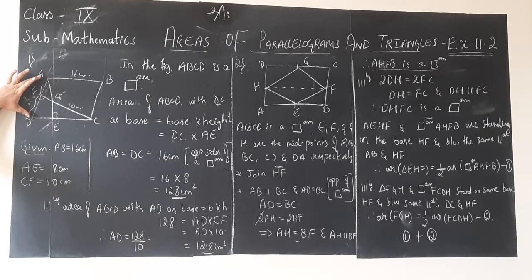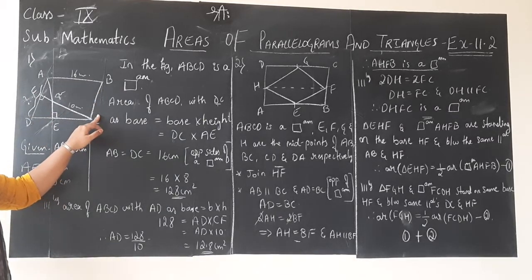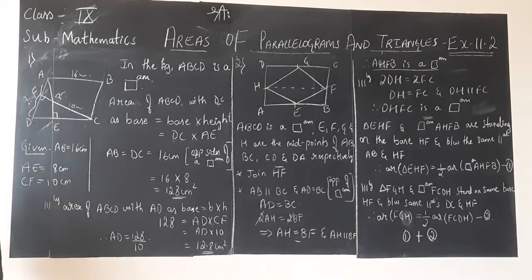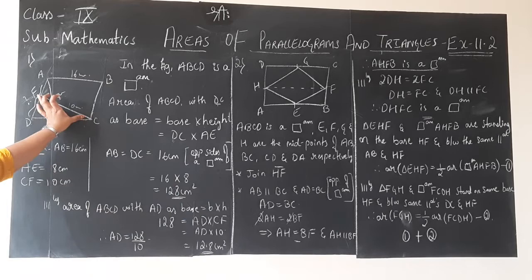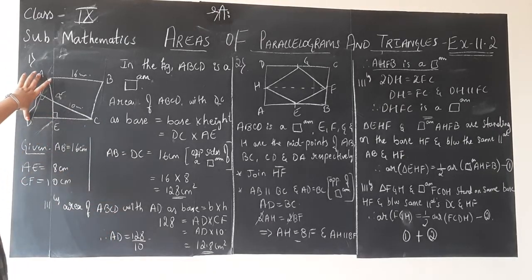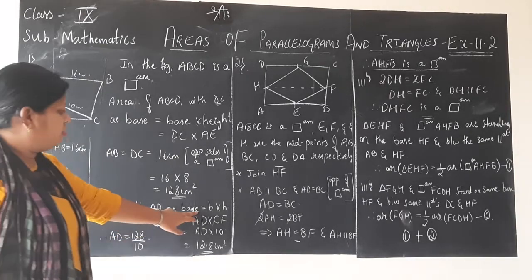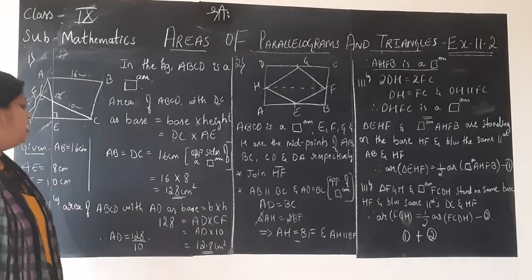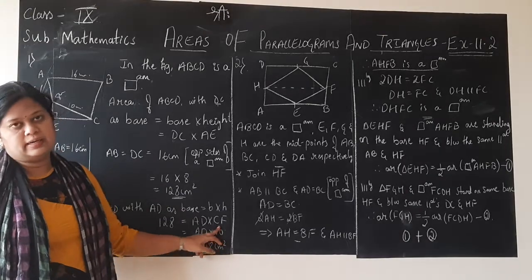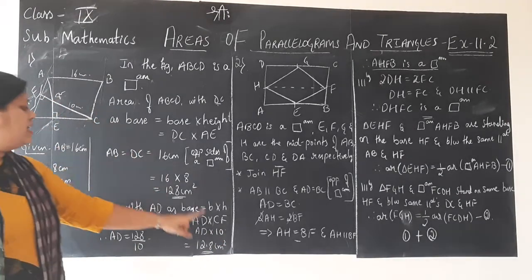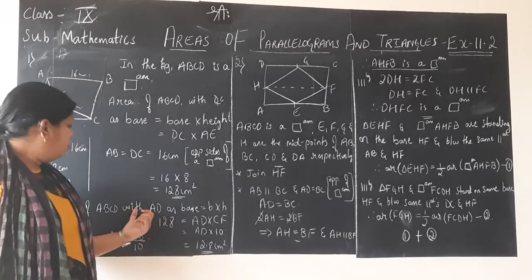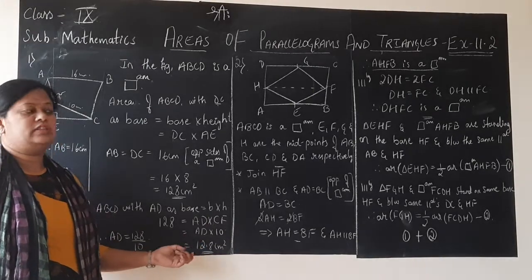We do not know what BC or AD is. In that case, we consider the area of parallelogram ABCD again, this time with AD as the base. Using the same formula — base into height — AD is the base and CF is the corresponding height. So area = AD × CF. We know CF is equal to 10 cm, but we do not know AD — that is what we are finding.